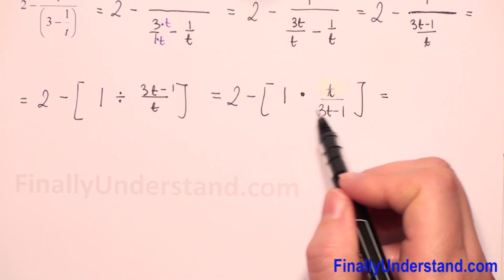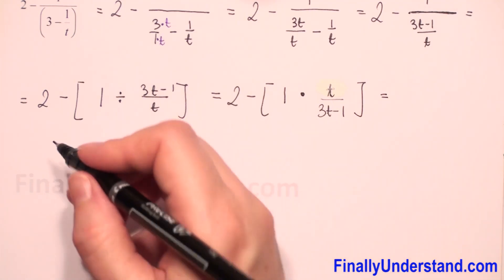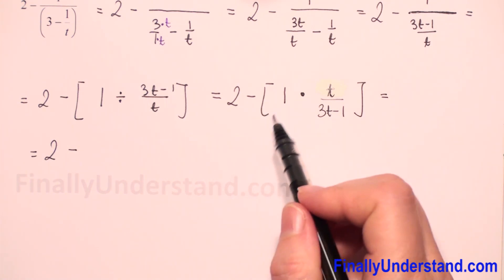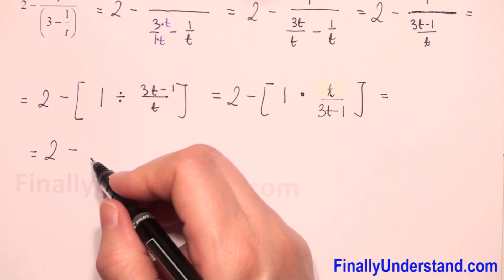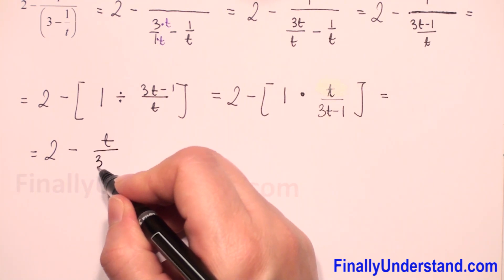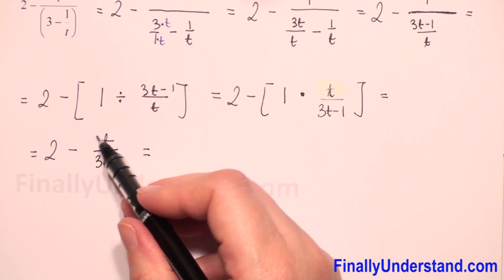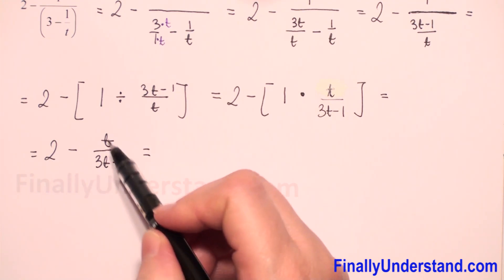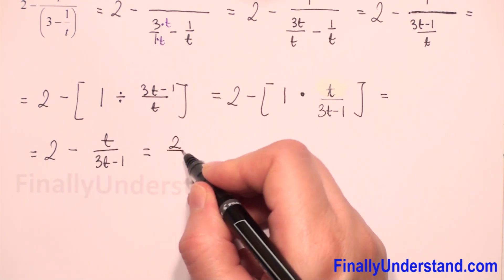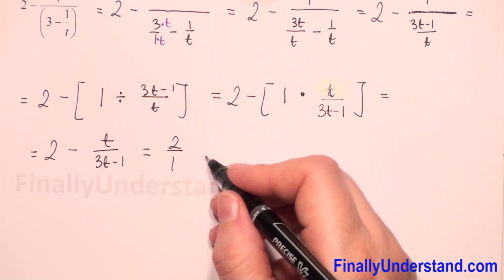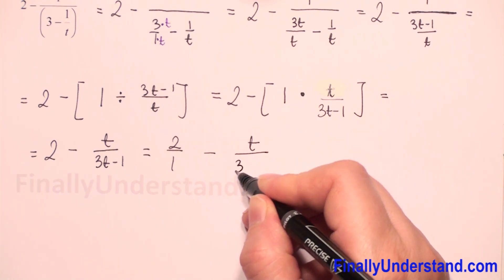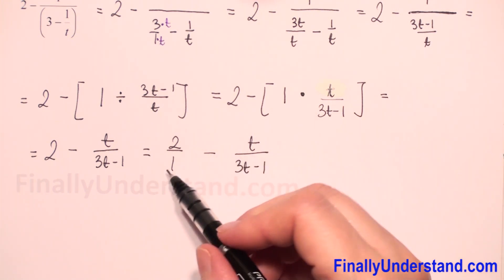When we multiply by 1 it doesn't change anything, so we copy 2 minus — now we don't need these brackets — we have t over 3t minus 1. Because we have a number and a fraction, I will change 2 to a fraction: 2 over 1. And we have fraction minus fraction: minus t over 3t minus 1.